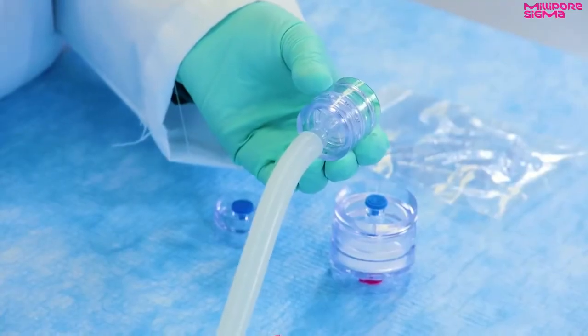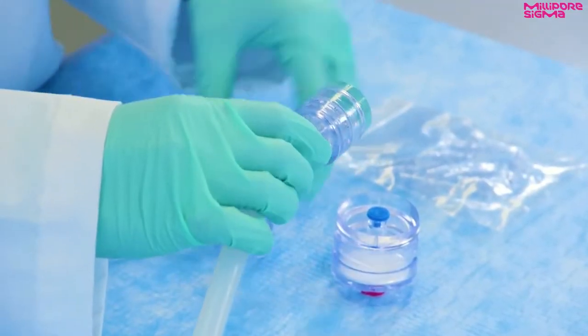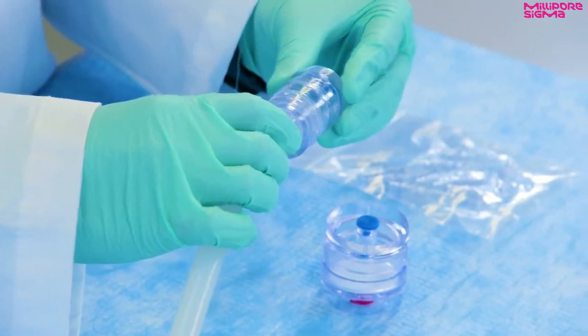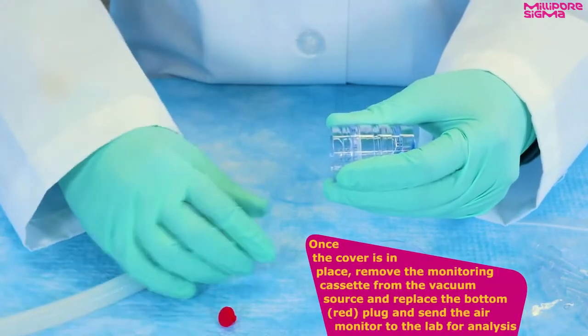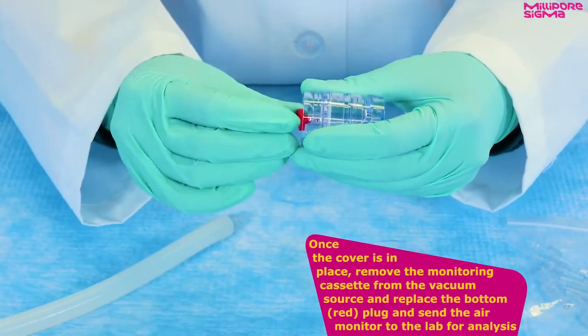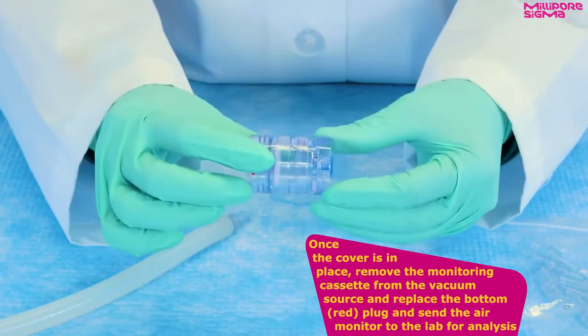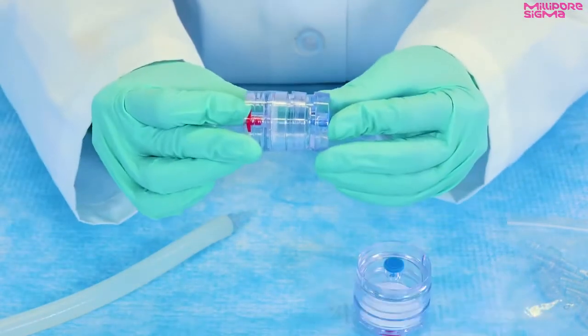After the sampling is complete, turn off the vacuum and replace the monitor cover to protect the filter. Once the cover is in place, remove the monitoring cassette from the vacuum source and replace the bottom red plug. Send the air monitor to your lab for analysis.